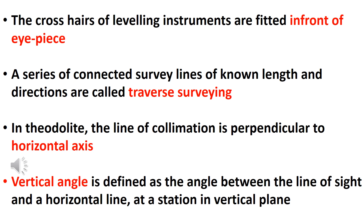Vertical angle is defined as the angle between the line of sight and the horizontal line at a station, measured in the vertical plane. In the vertical plane, the angle between the horizontal line and the line of sight is the vertical angle.